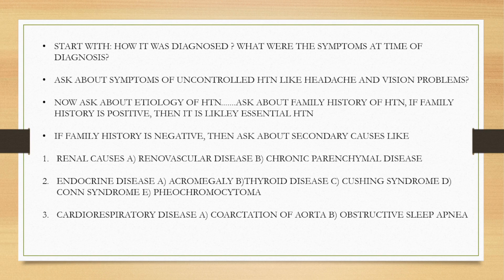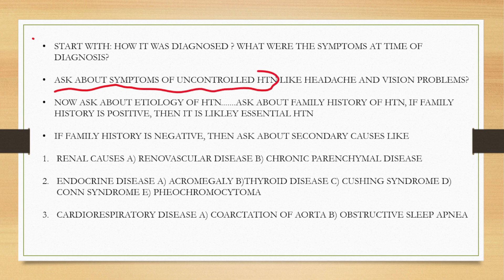If the patient is hypertensive, we will start with how it was diagnosed — what symptoms were present at the time of diagnosis. Then we will ask for how long the patient has been having hypertension, meaning the duration of the illness. The next step is to ask about symptoms of uncontrolled hypertension. There are two important symptoms: headache, and vision problems like blurry vision.